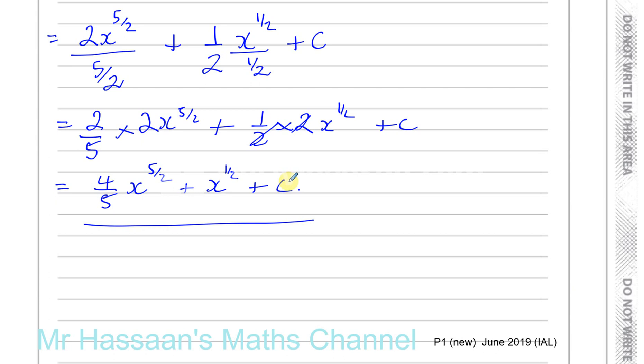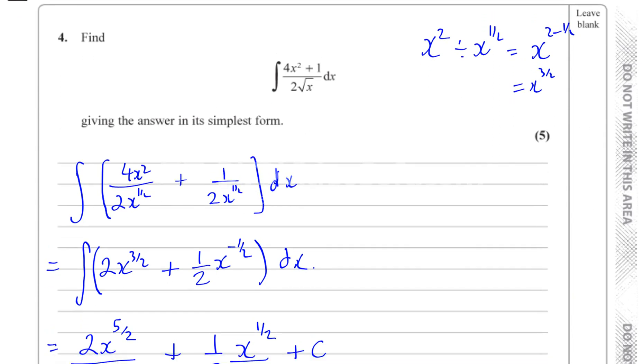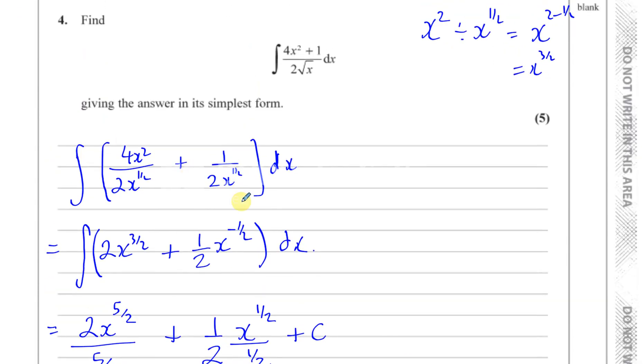all right, and that constant is there to represent something that could have been in the original expression before you differentiated it. When you differentiate a constant, it becomes 0. So if you were going backwards, there could have been a constant here, which became 0 when it was differentiated, so that represents that constant.